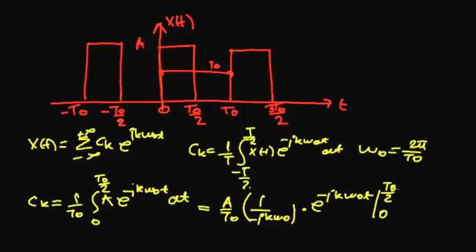So, substituting these values, we have A over T0, 1 over minus jk, we substitute that omega 0 is 2π over T0. And the exponential of minus jk, 2π over T0, and T is T0 over 2. We eliminate this.